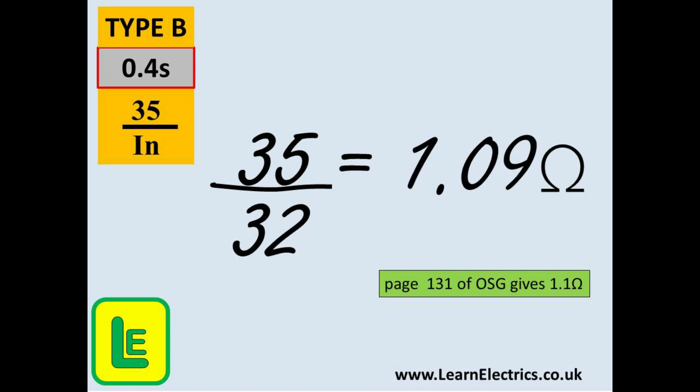And finally for type B breakers let us try the ever popular 32 amp device. So 35 divided by 32 gives us 1.09 ohms. The book gives us 1.1 ohms. This is close enough and in fact some test sheets do actually quote 1.09 ohms. Most times your circuit ZS will not be anywhere near these maximum figures so you will not have to worry about any small differences.